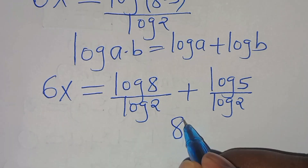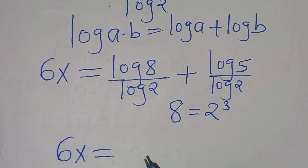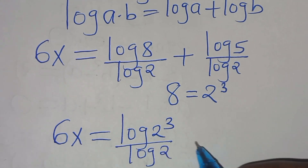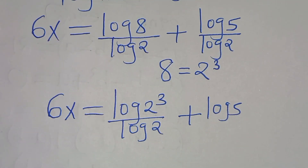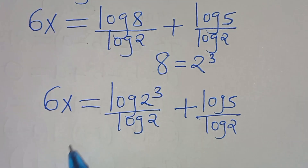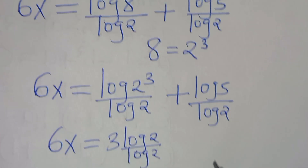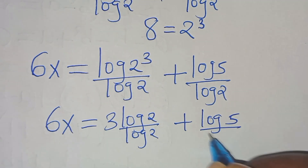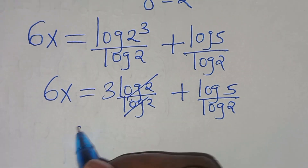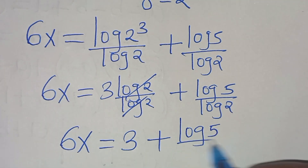Now the next step is that we can express 8 as 2 to the power of 3, so this implies 6x equals log of 2 to the power of 3 divided by log 2, plus log 5 divided by log 2. Applying the power property, log 2 to the power of 3 becomes 3 log 2 divided by log 2. Simplifying log 2 and log 2, we have 6x equal to 3 plus log 5 divided by log 2.